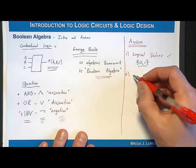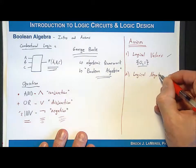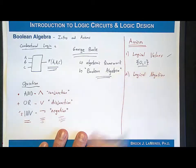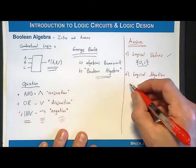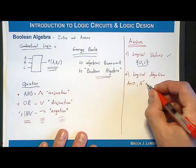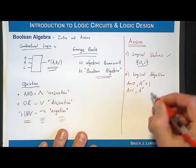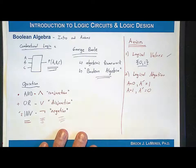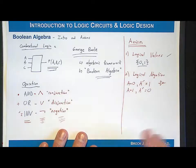The second axiom is the definition of logical negation. Negation is simply an inverter, but we have to state it formally. If A is equal to zero, then A negated is equal to one. Conversely, if A is equal to one, then A NOT is equal to zero. This basically states the operation of an inverter — you have to have that truth accepted before you can move on to anything more complicated.